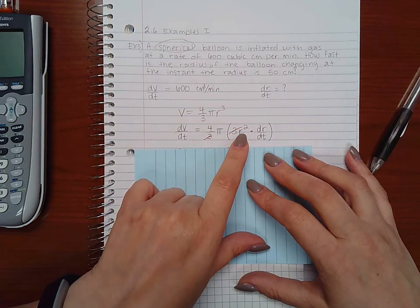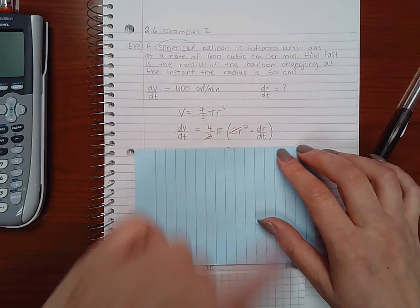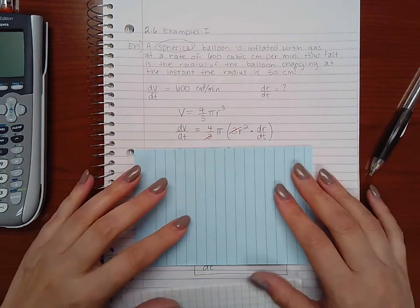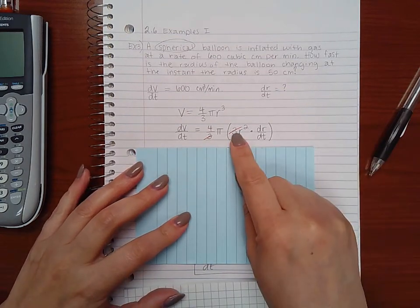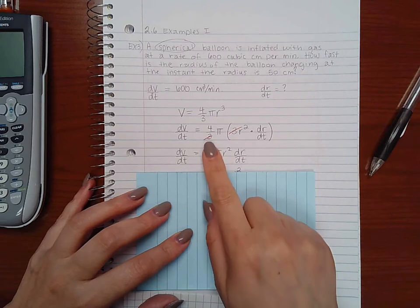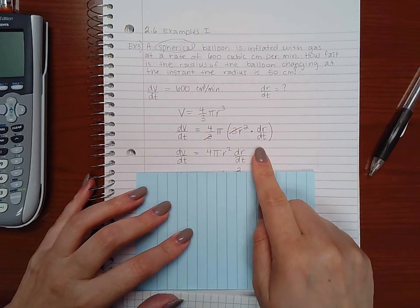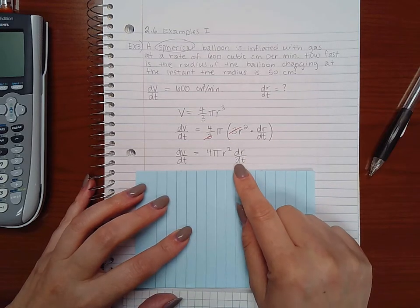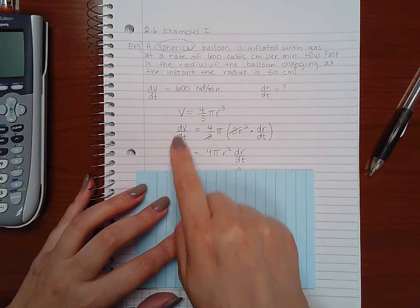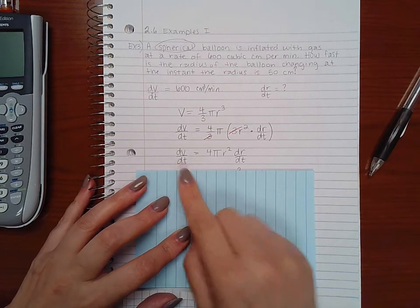So since the base is not a t, I have to multiply by the derivative of that base, and the derivative of r is dr/dt. Now the threes do cancel here, leaving me with four pi r squared dr/dt, which is what I have here in this equation. Left-hand side stays exactly the same.